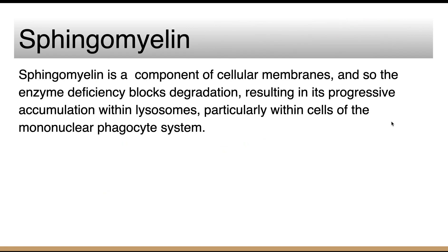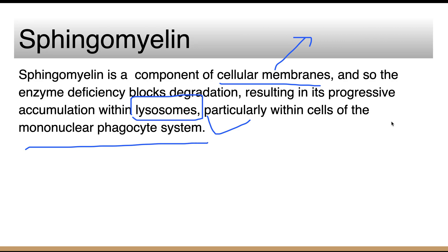Sphingomyelin is a component of cellular membranes — all cellular membranes contain sphingomyelin. Whenever there is degradation of cellular membranes, turnover takes place in the body, releasing sphingomyelin. If sphingomyelinase is absent, there will be no degradation of sphingomyelin and it will accumulate in the lysosomes.